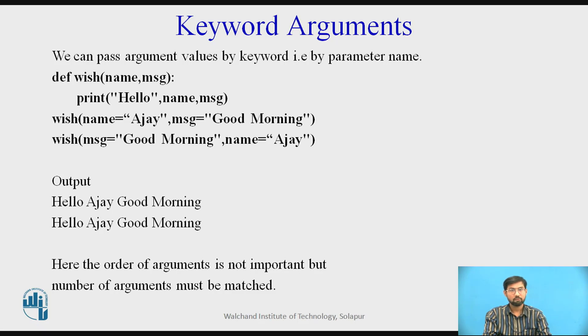So here if you observe, we get the same output, hello Ajay good morning, two times. We are changing some of the things within our Python program. The order of argument is not that important because it is a string, not integer values. But the number of arguments must be matched. That means name and message must be matched.